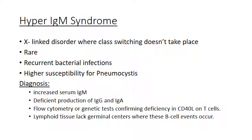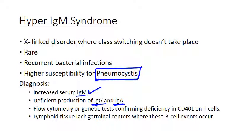Hyper-IgM syndrome is a fairly rare X-linked disease in which class switching to IgG, IgA, or IgE just doesn't happen. Patients get recurrent bacterial infections and have a higher susceptibility to Pneumocystis jirovecii. When you assess this patient, you'll see really high levels of IgM and really low levels of IgG or IgA. Normally you get IgM first and then IgG takes over; with a repeat immunization you should see IgG peak even more and very little IgM. These patients have the opposite — they can't get to IgG.